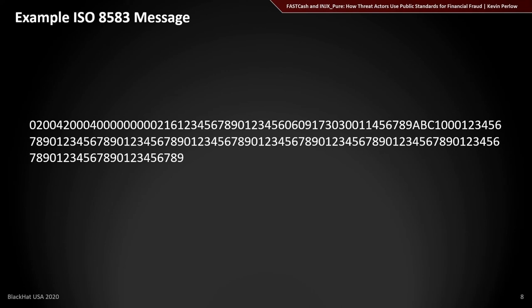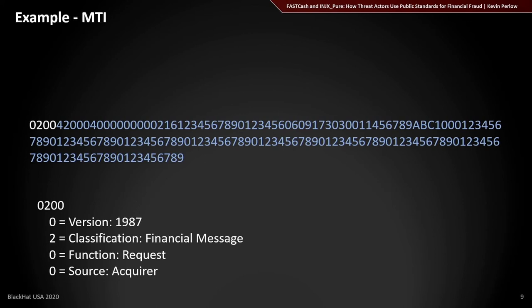Breaking down the example message, the first four digits are the message type identifier. The first digit indicates the version — in this case, version 1987 of ISO 8583. The second digit is the classification, which is really important for Fast Cash: it indicates whether something is a financial message, a chargeback, or an authorization. The third digit indicates whether something is a request or a response. The fourth digit is the source of the message.